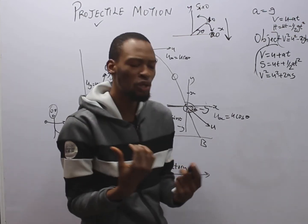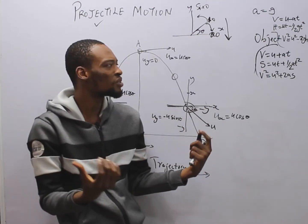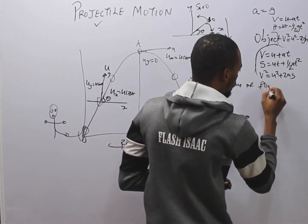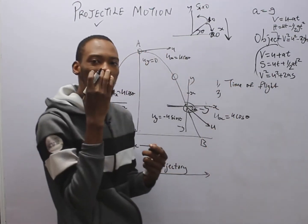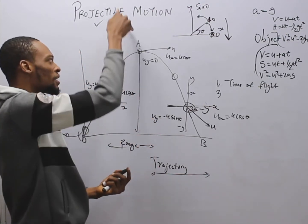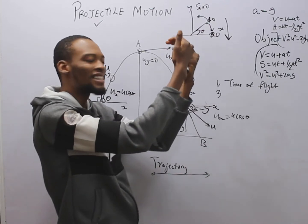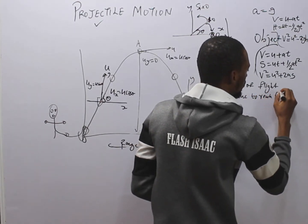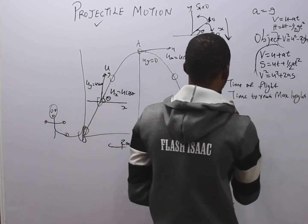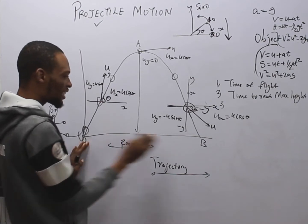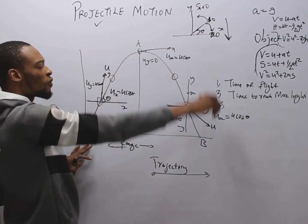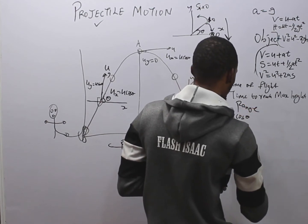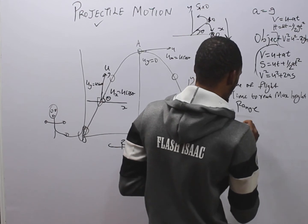The key quantities to calculate in projectile problems are: (1) time of flight — the total time the motion takes; (2) time to reach maximum height; (3) range — the horizontal distance from launch to landing; and (4) maximum height. Note that in projectile motion, air resistance is always neglected.